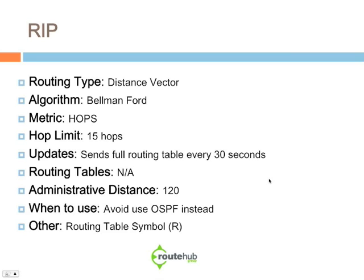There are two versions of RIP: version 1 and version 2. Version 2 is recommended over version 1 if it needs to be used, as it provides things such as route authentication. The algorithm associated with RIP is called Bellman-Ford.